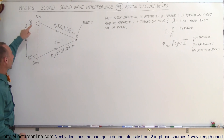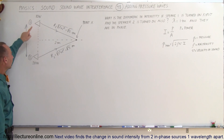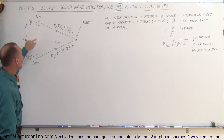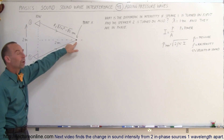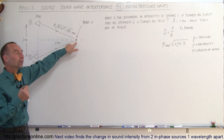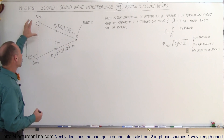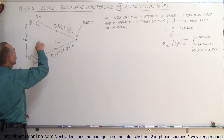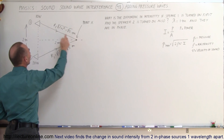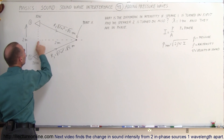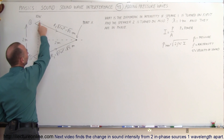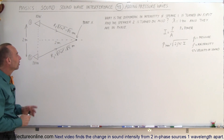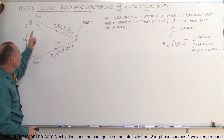What we have here is two sound sources: one that puts out 10 watts of sound and one that puts out 20 watts of sound. There's a point equal distance from both speakers where we want to find the intensity and the change in intensity. The distance between the speakers is two meters, and the distance from the point to the line connecting the speakers is also two meters, so the distance from the point to each speaker is the square root of one squared plus two squared, which equals the square root of five meters.